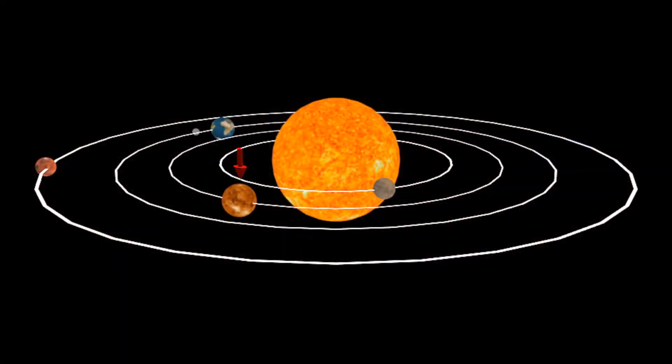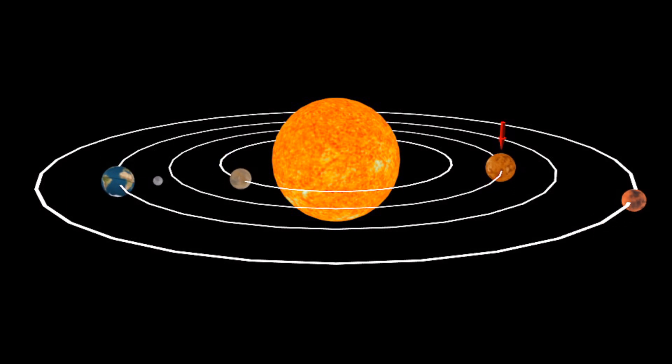The Sun is the center of our solar system, and there are actually eight different planets that revolve around the Sun. I made a short animation showing the four inner planets revolving around the Sun.